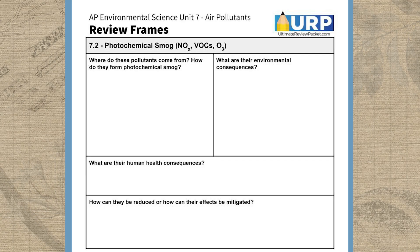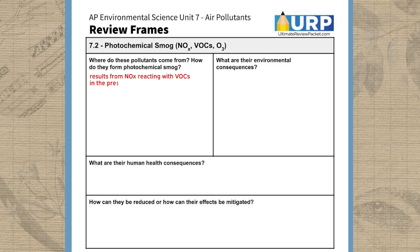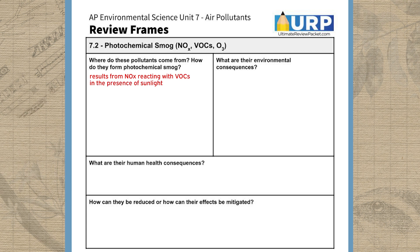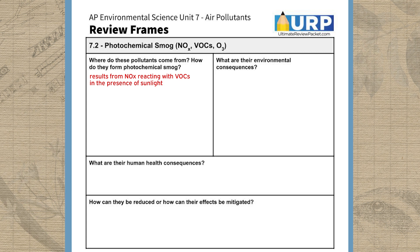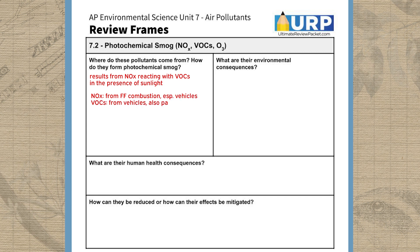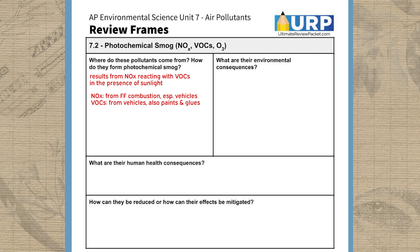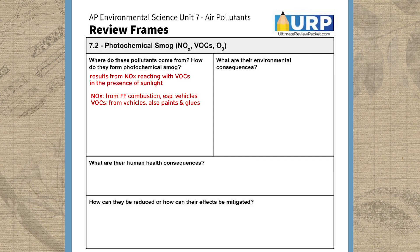First, we need to remember that photochemical smog is a form of pollution that results from nitrogen oxides, or NOx, reacting with volatile organic hydrocarbons, or VOX, in the presence of sunlight and heat. To answer the question of where it comes from, we need to review where NOx and VOX come from. NOx come from fossil fuel combustion, but especially car exhaust or other vehicle exhausts in urban areas. VOX also come predominantly from vehicle exhausts since we're burning hydrocarbons, but they can also be released from paints, cleaning products, and glues.